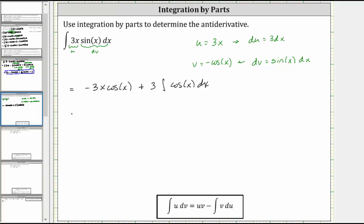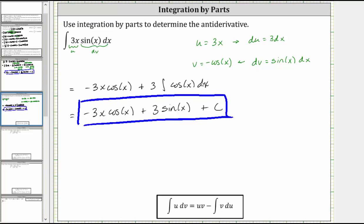Notice now the new integral is simpler. So the final antiderivative is equal to negative 3x cos(x) plus 3 times the integral of cos(x), which is equal to sin(x). And then we add the plus c. I hope you found this helpful.